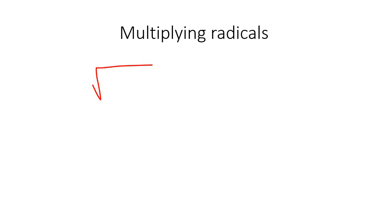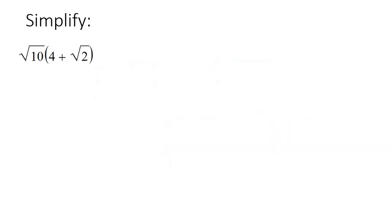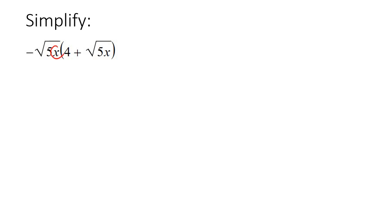In this lesson, we're going to look at how to multiply radicals. Radicals are things that have like a square root, a cube root, a fifth root, a fourth root. We're going to learn how to multiply them. We're going to be doing examples that have numbers, and then we'll also do examples that have letters or variables.